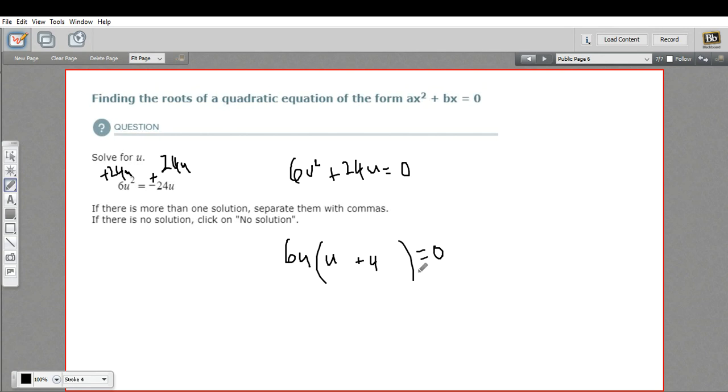To get the roots, then we just set each of those factors equal to zero. So 6u equals zero, and u plus four equals zero. And then we solve for u.